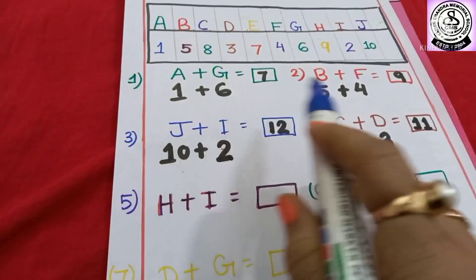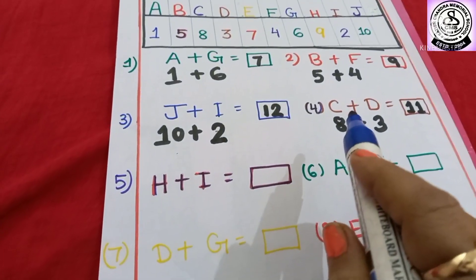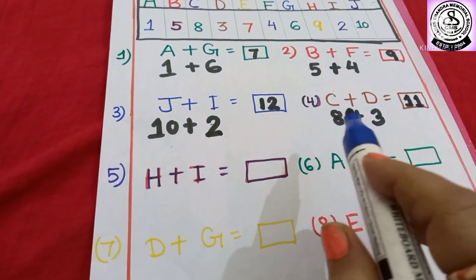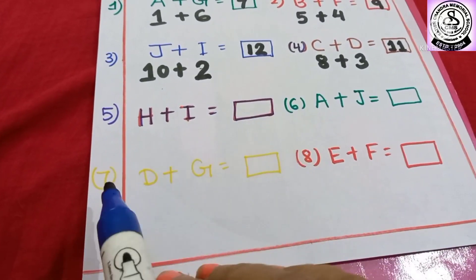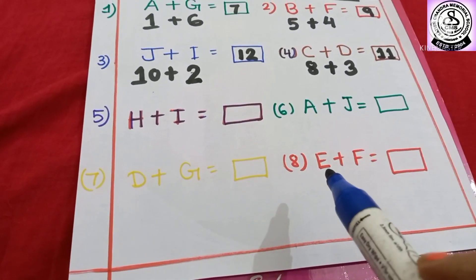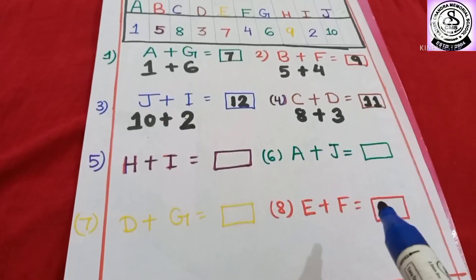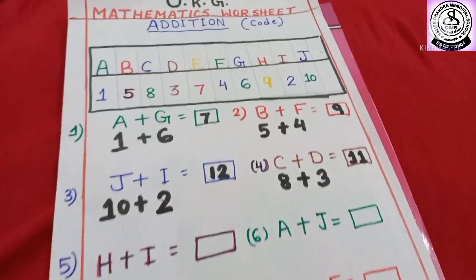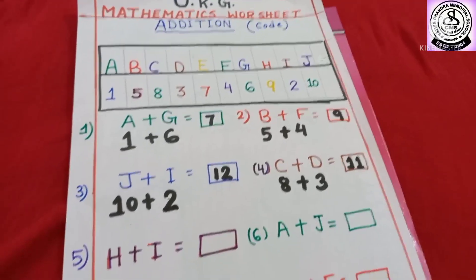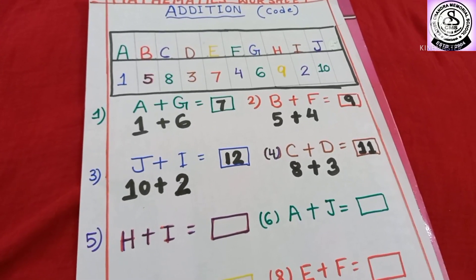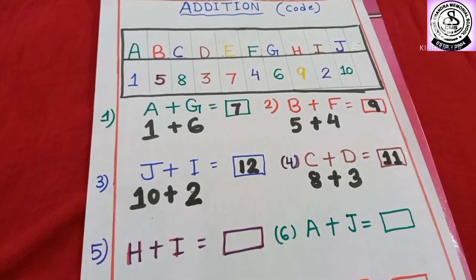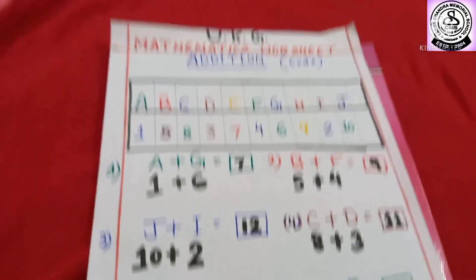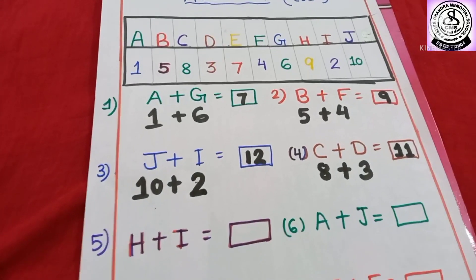So, number 1, 2, 3, and 4 I have done. Number 5, 6, 7, and 8 you have to do it by yourself. And I hope you all have enjoyed my this activity, my this worksheet. So, that's all for today. Again, I will come with my new worksheet. So, bye everybody.